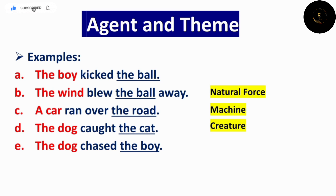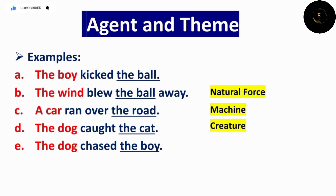پہلی example میں ہم نے the boy کو agent کہا، لیکن ضروری نہیں کہ boy ہر جگہ agent ہی ہو۔ 'The dog chased the boy' — اس میں agent کون ہے؟ Dog ہے، کیونکہ action dog کی طرف سے perform کیا جا رہا ہے۔ Boy کوئی بھی action perform نہیں کر رہا — جو performer ہوگا اس کو ہم agent کہیں گے۔